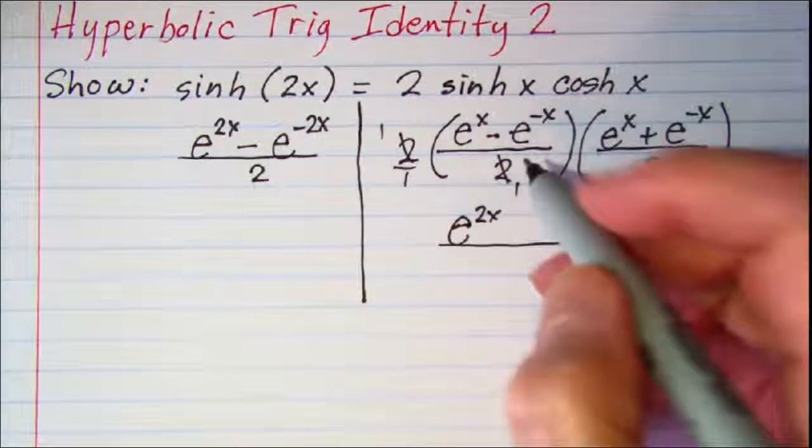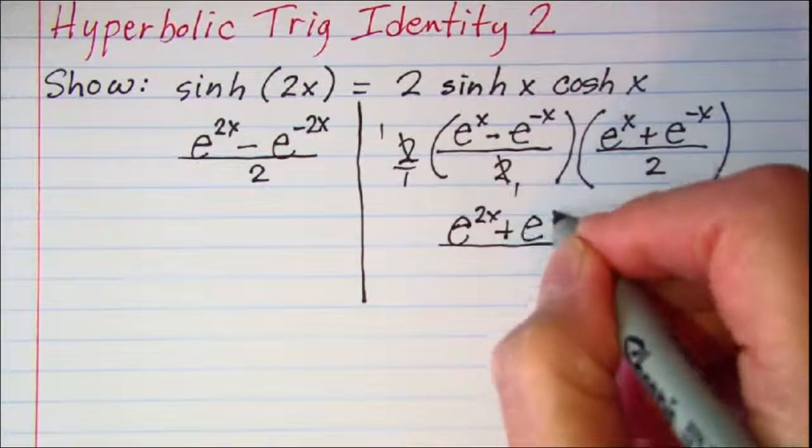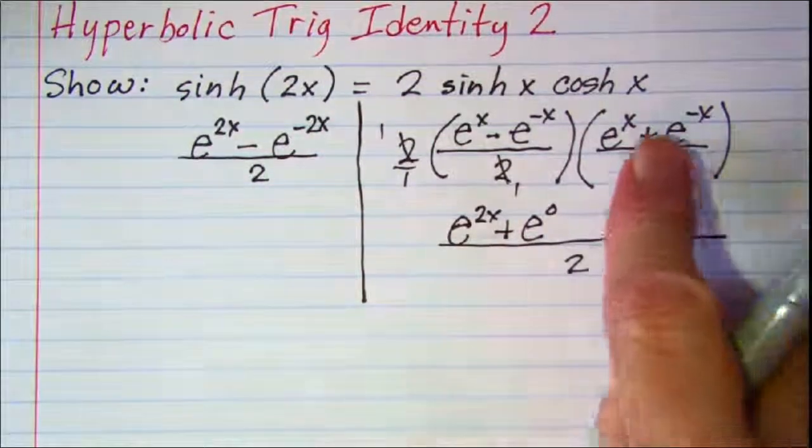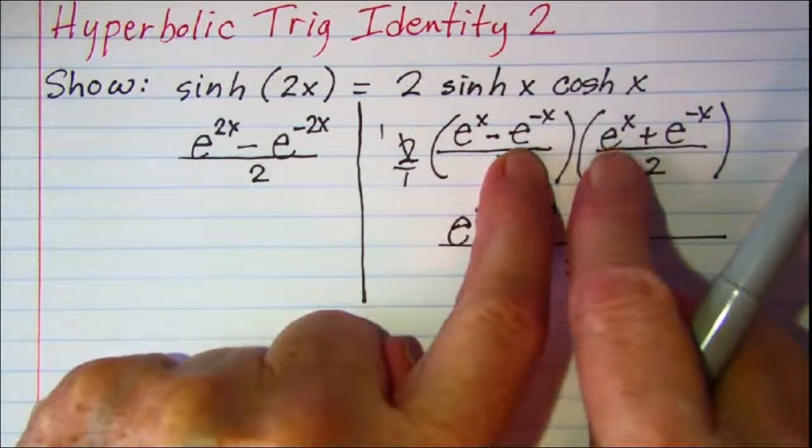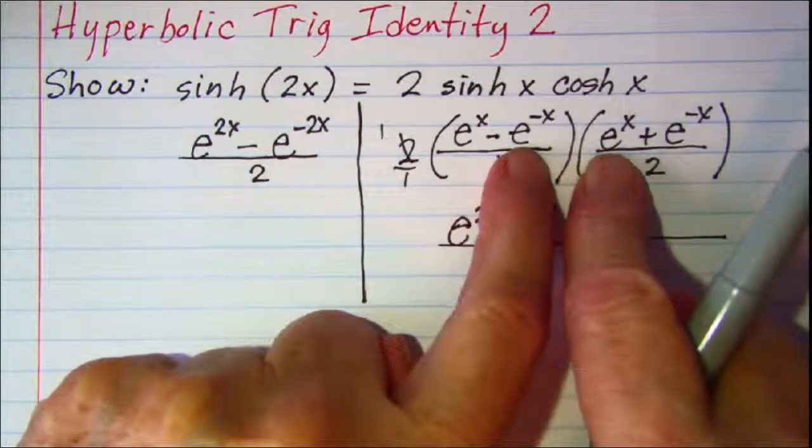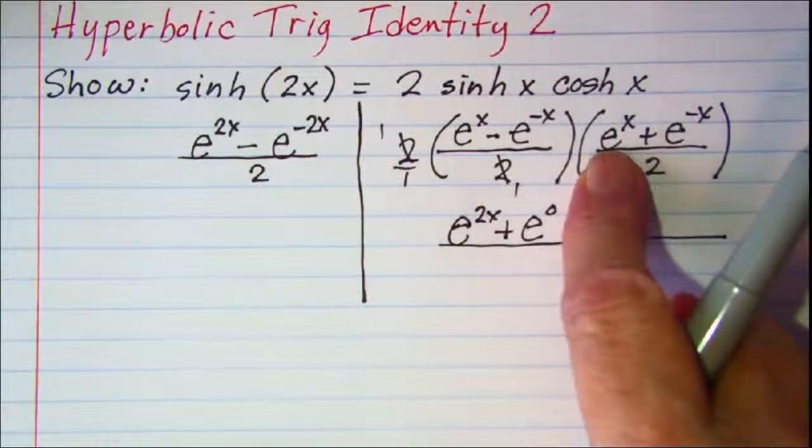So this is e to the 0. And then for our inner product we have a negative e to the x times e to the x. That will give me a negative e to the 0.